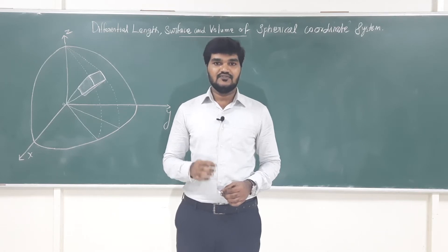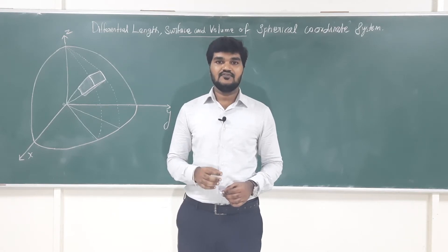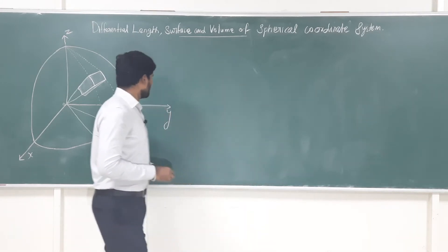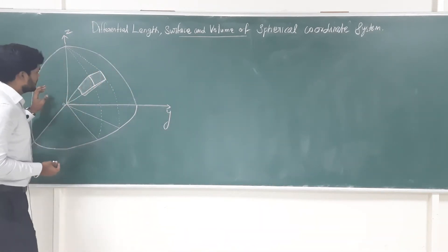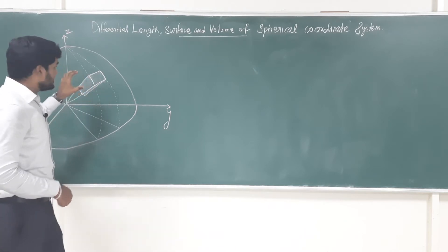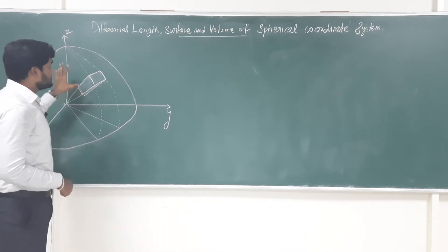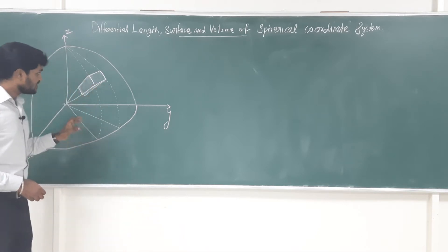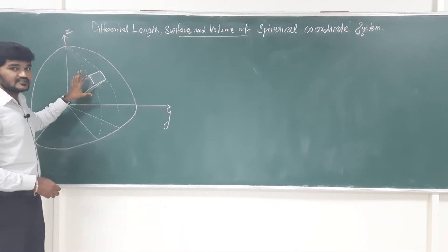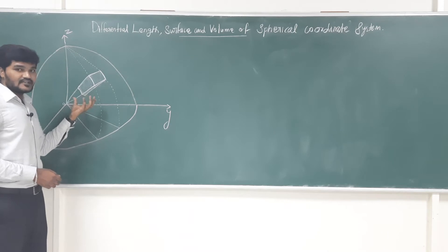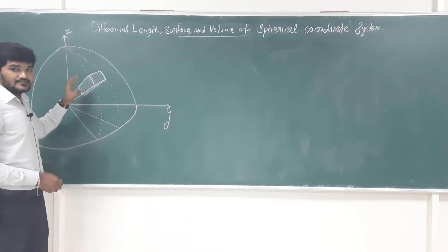In this video, we are going to see differential length, differential surface, and differential volume of the spherical coordinate system. Let us consider the spherical coordinate system. Here, I have drawn the spherical coordinate system over the rectangular coordinate system. In the spherical coordinate system, I have taken a small three-dimensional spherical space for analysis purposes.